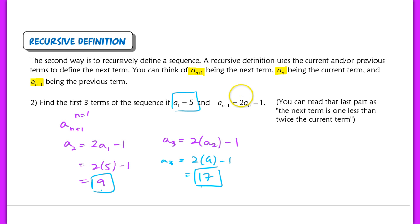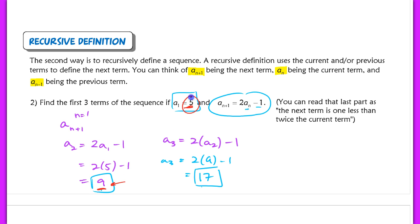If you read this statement out loud, you can think of it as: the next term is twice the current term minus 1, or 1 less than twice the current term. We can verify this holds: the first term is 5 and the next term is 9, and 9 is indeed 1 less than twice 5.